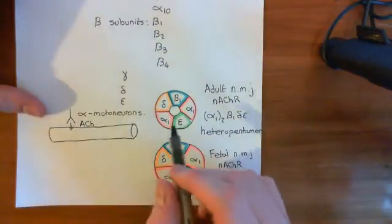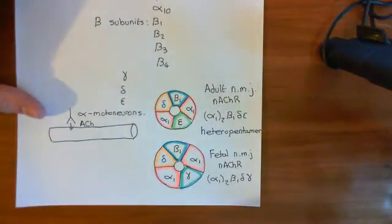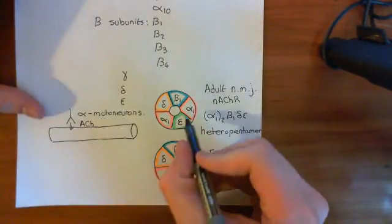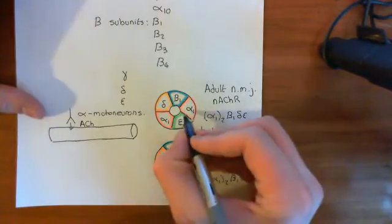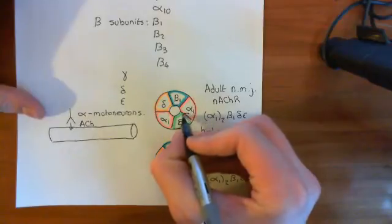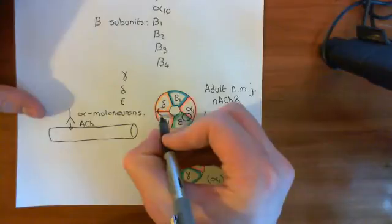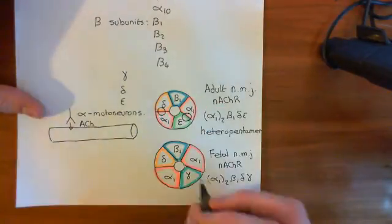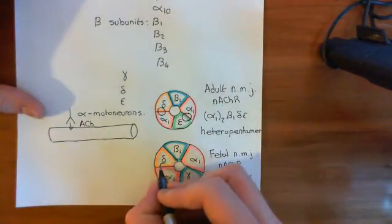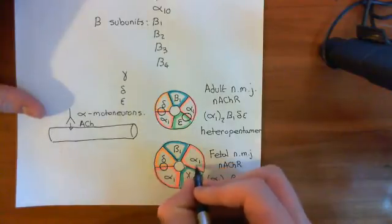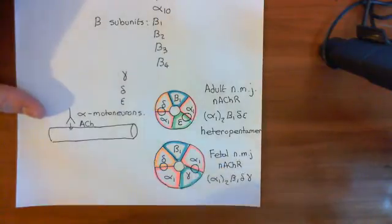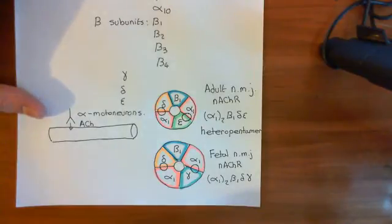The acetylcholine molecules bind between two subunits: between the alpha-1 and the epsilon subunit, and also between the alpha-1 and the delta subunit. In the fetal form it will be exactly the same — between the alpha-1 and the delta subunit, and between the alpha-1 and the gamma subunit. Let's discuss this binding site in a bit more detail.